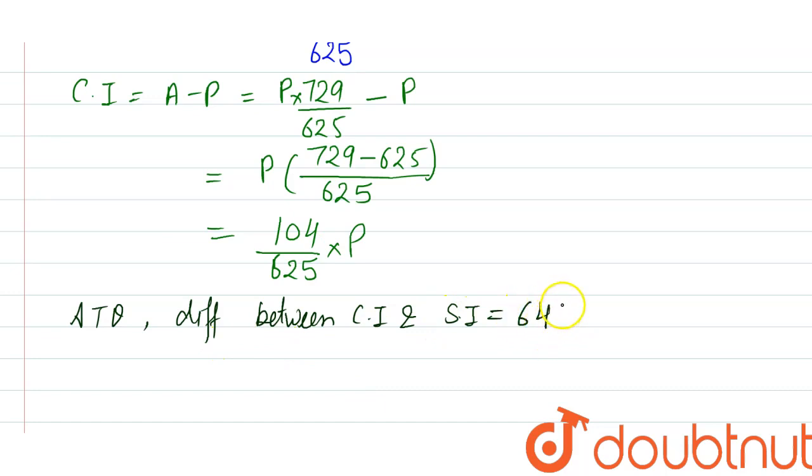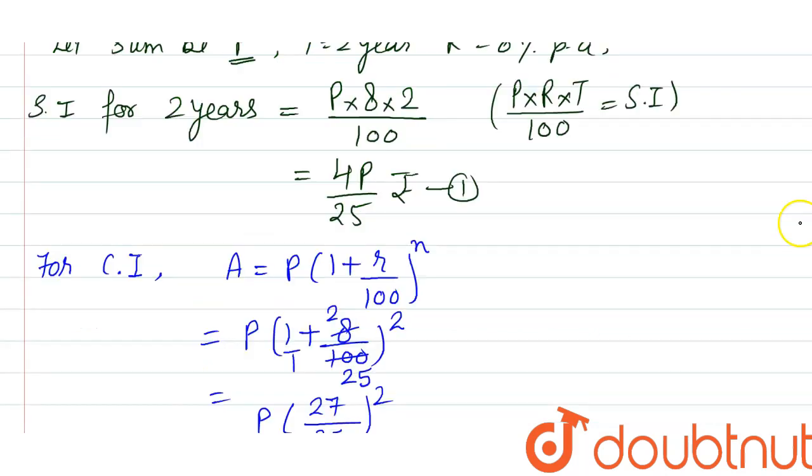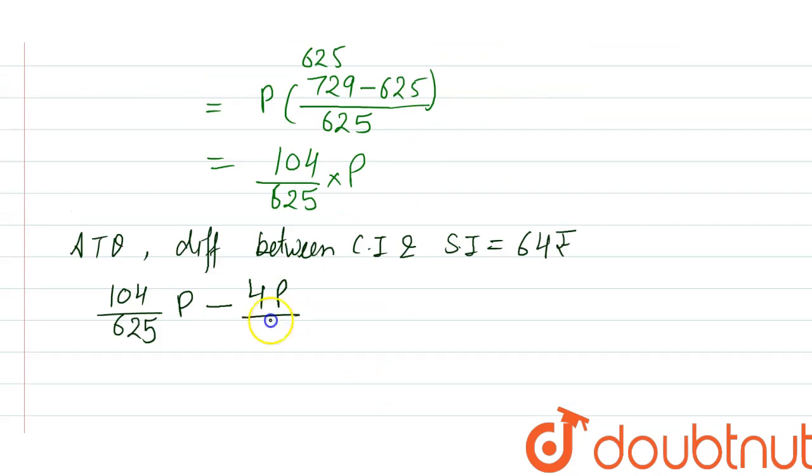Now according to question, difference between compound interest and simple interest is rupees 64. So here compound interest we have calculated 104P/625 and simple interest is 4P/25, so minus 4P/25, and it should be equals...